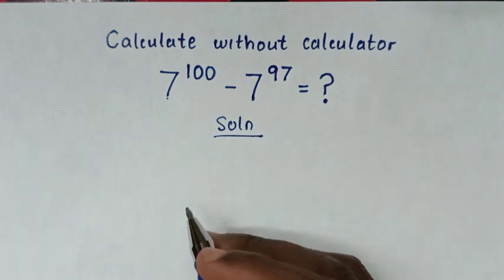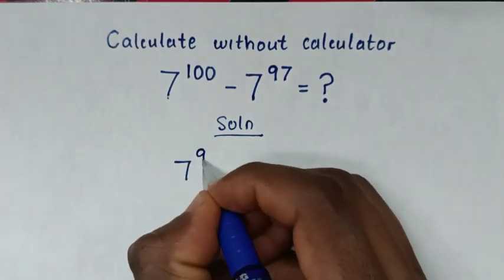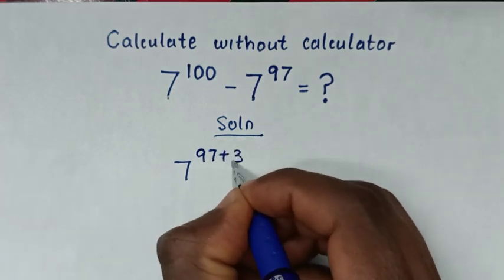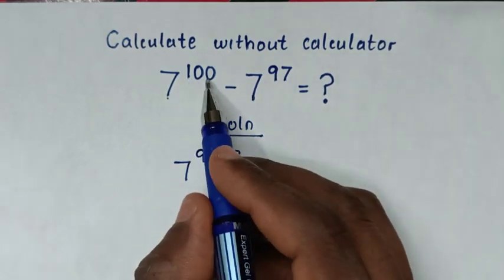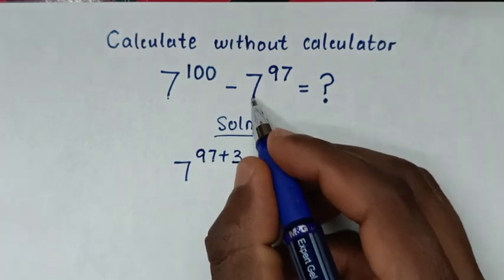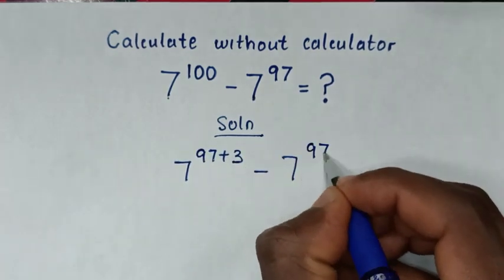Then this 7 power of 100 is same as 7 power of 97 plus 3, because 97 plus 3 is power of 100. Then minus this 7 power of 97.